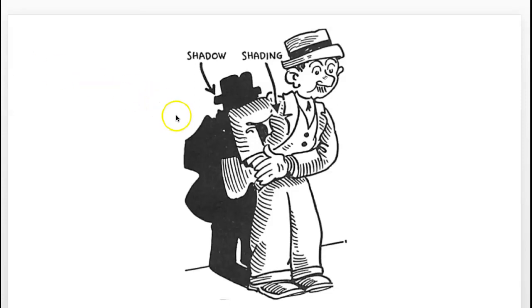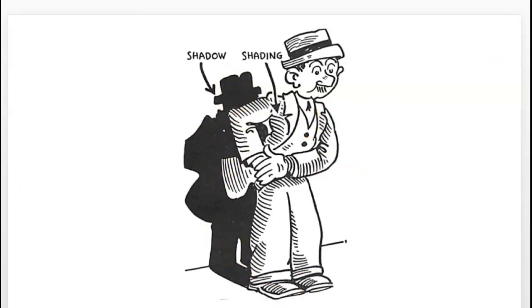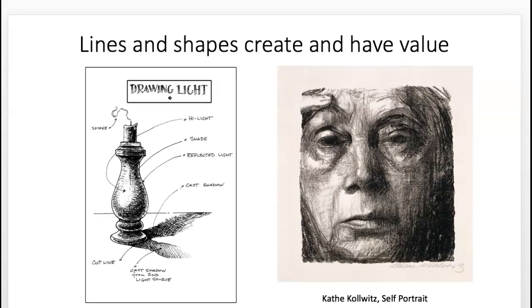Let's go over some terminology. When a subject has value on it from a light source — like bright light shining on it — shading is what's on the form. We've done this a little already with our line assignment. Whatever is cast by an object onto another surface on the opposite side is called shadow. You may know this terminology already; I just want to make sure we're all on the same page.